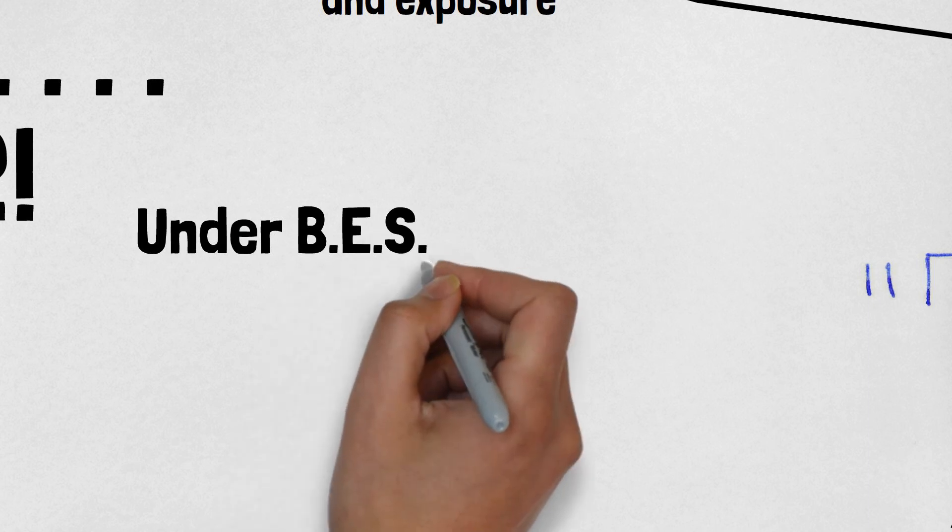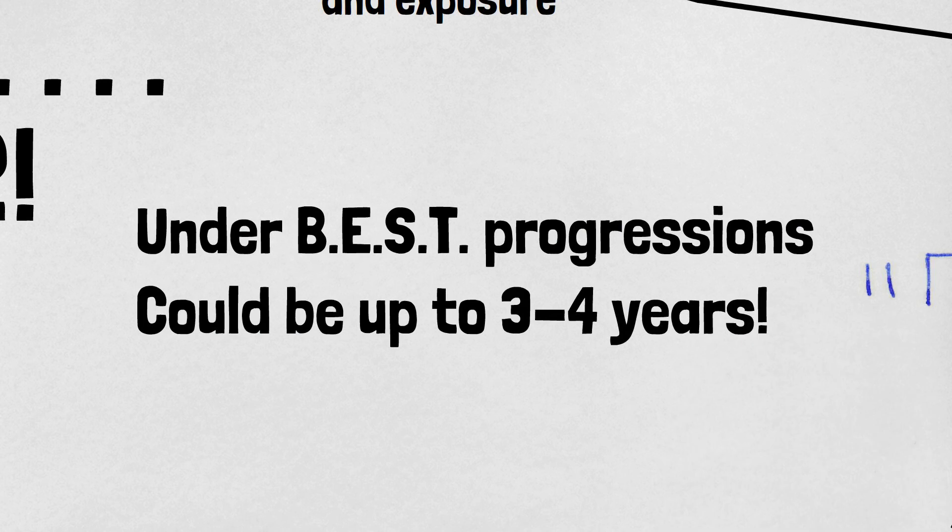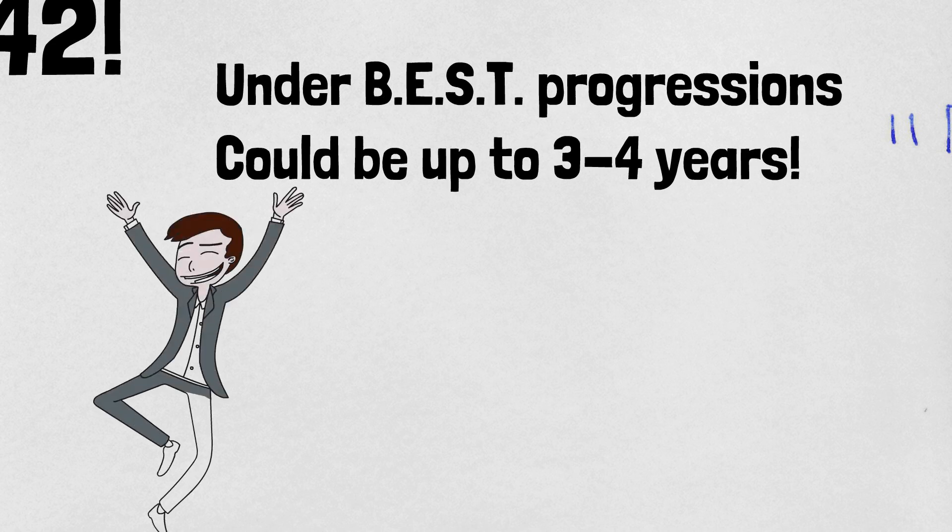Under the BEST standards, these progressions could be up to three or four years. That means, as a second grade teacher, you may only work under one layer of fluency and never get to efficiency. And that's okay.